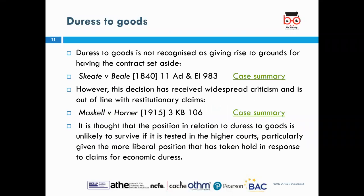The next topic is duress to goods. Duress to goods is not recognised as giving rise to grounds for having the contract set aside. In Skeat v Beale 1840, a promise given in return for goods that had been unlawfully detained was held to be valid. A landlord owed money by the tenant seized the tenant's goods and threatened to sell them immediately unless the tenant entered into an agreement for repayment of sums owed. The tenant agreed the repayment terms but then sought to have the agreement set aside for duress. It was held that duress to goods will not suffice to render a contract voidable.